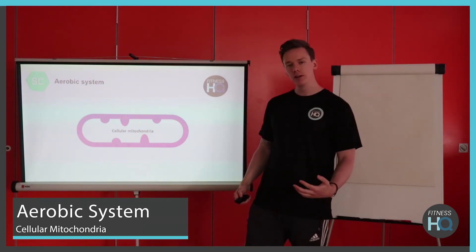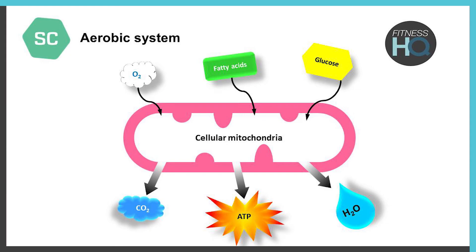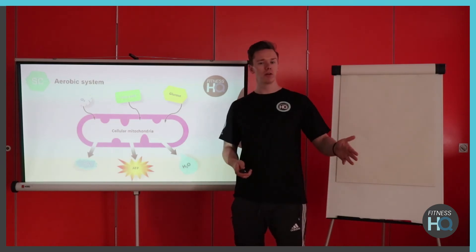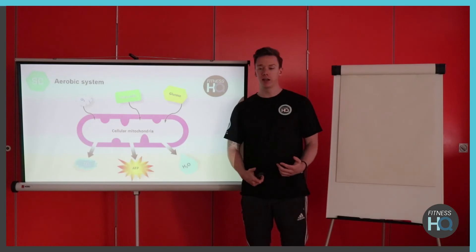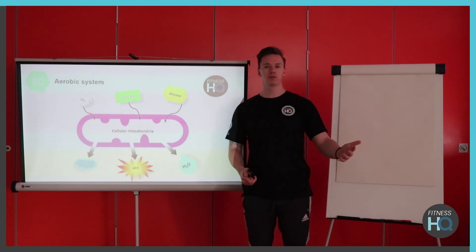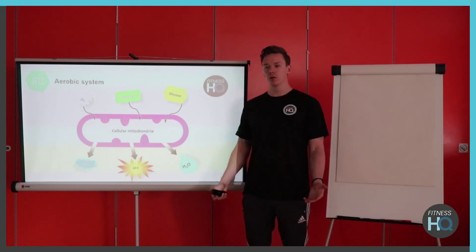I like to call the mitochondria the body's little energy factory. Three things go in — glucose, fatty acids, and oxygen — and three things come out: ATP as our energy source, carbon dioxide, and water. It's lower intensities and this process is much slower due to all the chemical reactions taking place in the mitochondria, so naturally it takes a little bit longer to produce ATP. However, it's much more sustainable once we've got it. Examples include marathons, triathlons, any long-duration low-intensity exercise — anything above three minutes you would class as aerobic exercise.